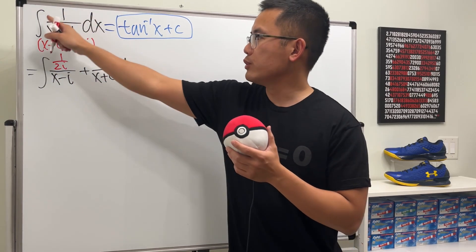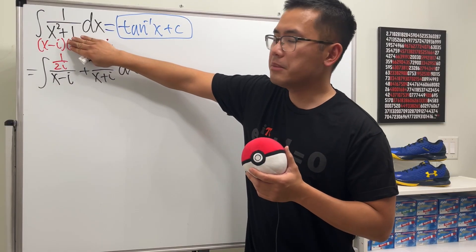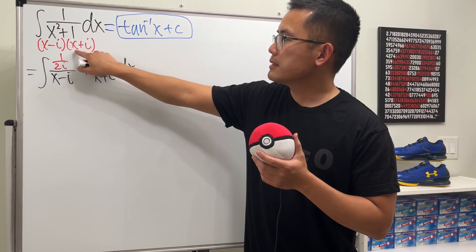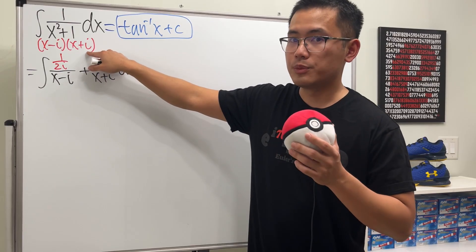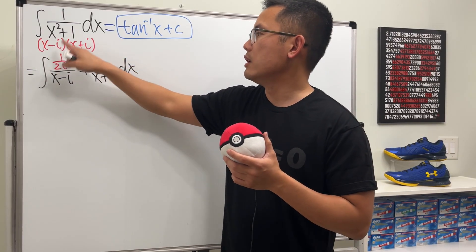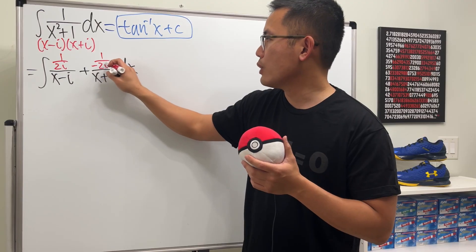And then to figure this out, we go back to the original, cover the same denominator, and ask ourselves, how can we make x plus i equals 0? So, x has to be negative i. And we put that right here, and we will end up with 1 over negative 2i.